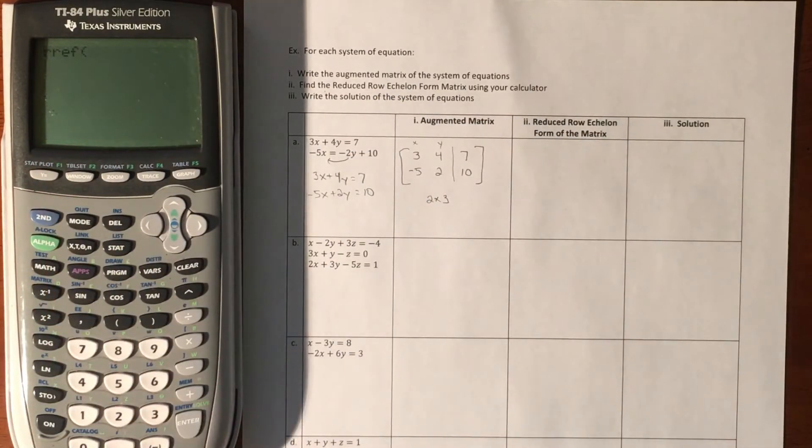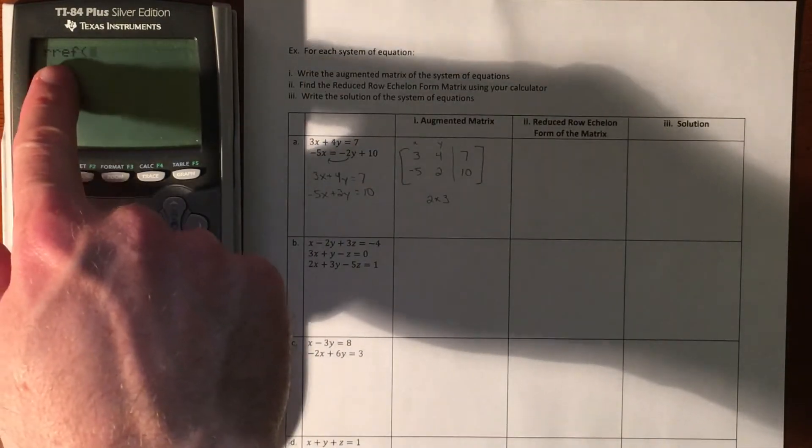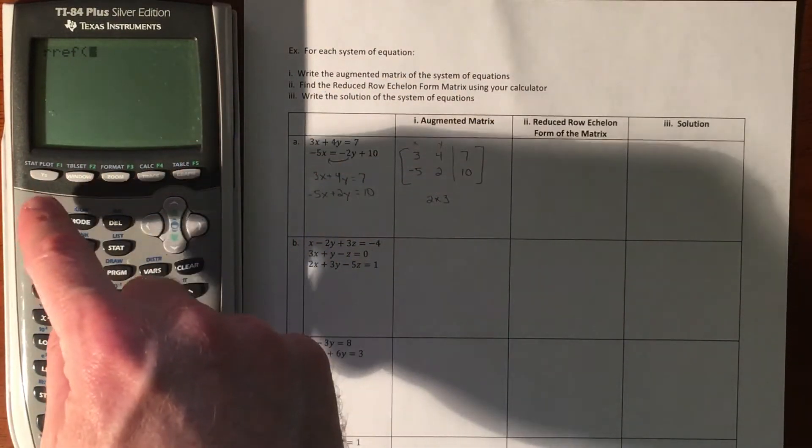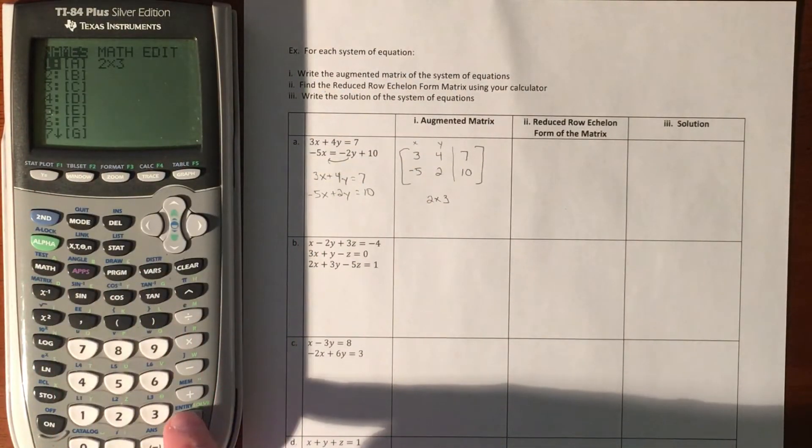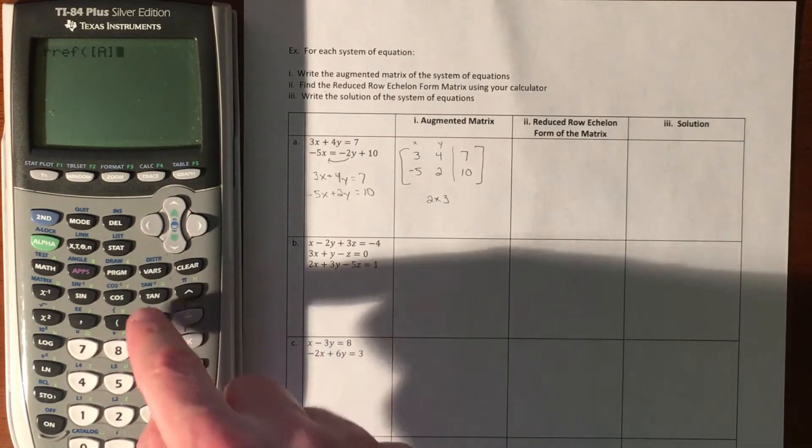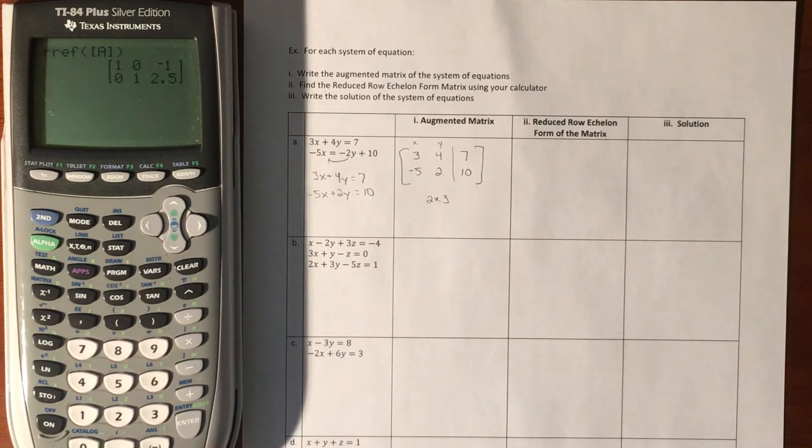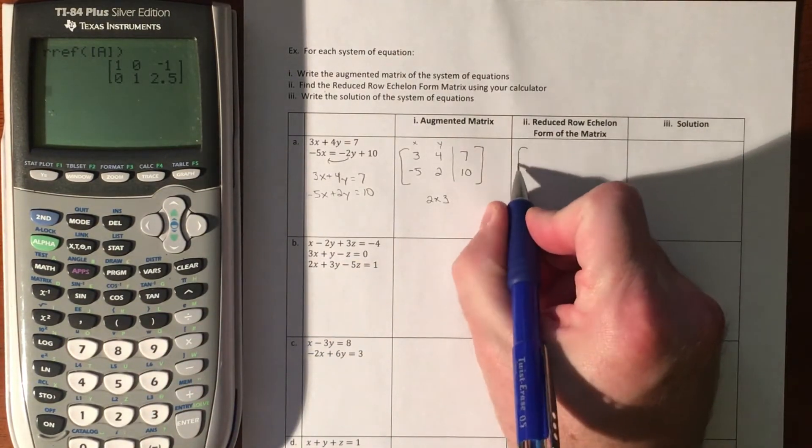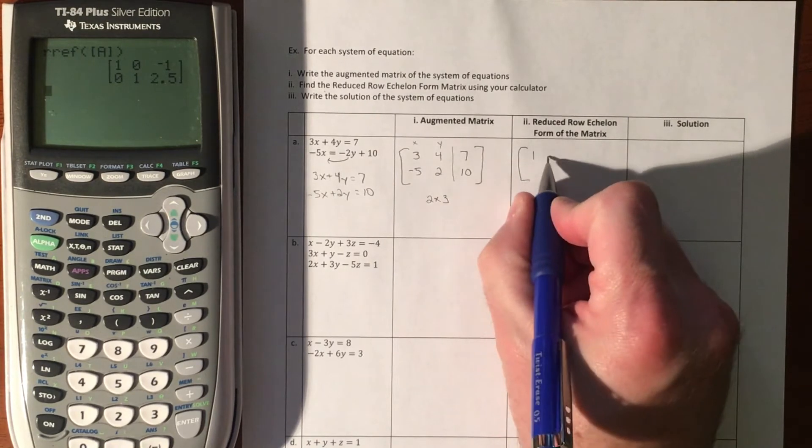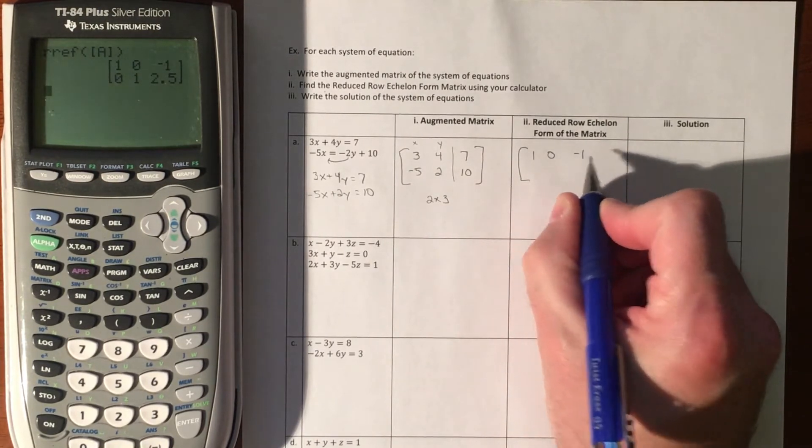Press enter, and now we want to do the row reduced echelon form of matrix A. We're on A, press enter, close the parentheses, let it do its thing. Let's make sense out of this. This has done elimination and given us this.